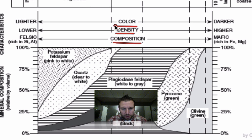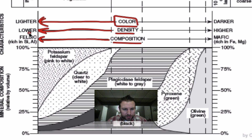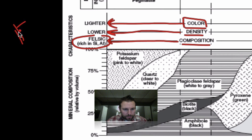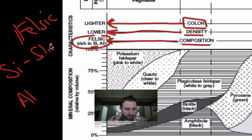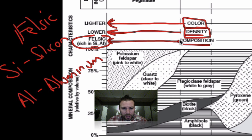Let's just take a look at the color. We can either be light or dark, so let's go to the left where it's going to be lighter. Notice that a lighter color also equates to a lower density, and if we look at the composition we see the term felsic — or rich in Si (silicon) and Al (aluminum). If you didn't know these two chemical symbols, you can go to the last page of the mineral identification chart for help. Just by looking at the color, we can figure out its density and the elements that might be making it up.